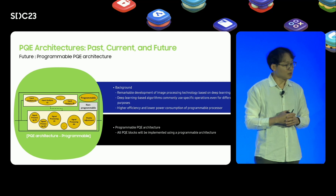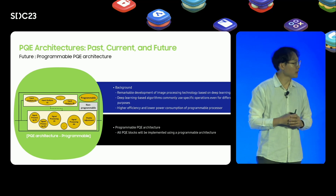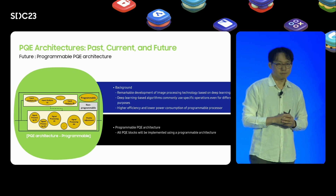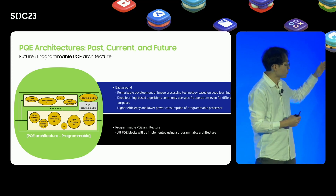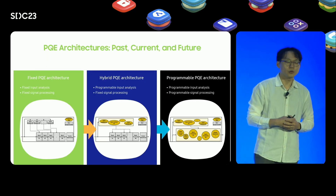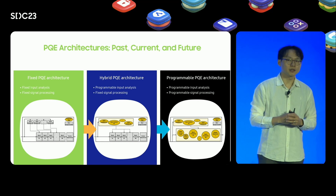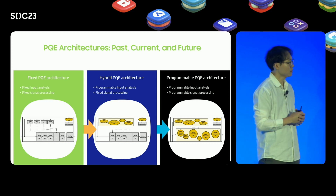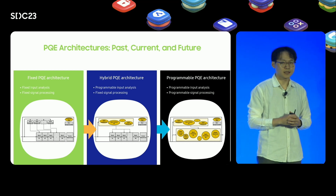The image processing field has also been developed using deep learning based algorithms. Additionally, high efficiency and low power programmable processors are emerging as the technical completeness of programmable processor design increases. Therefore, we would like to provide a fully programmable architecture including signal processing and display adjustment in the future. To summarize: currently we provide a hybrid PQE architecture that preemptively makes the input analysis part programmable, and through this we have accumulated management know-how of programmable architecture. In the future, we would like to provide a fully programmable PQE architecture thanks to the development of processor technology and deep learning based algorithms.